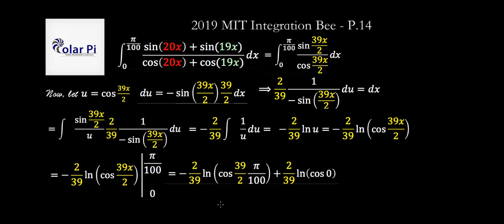And then, furthermore, cosine of zero is one, but the natural log of one is zero, so this part is gonna go away. And so our final answer is going to be negative 2 over 39 times the natural log of cosine of 39 pi over 200.